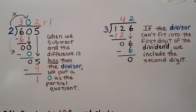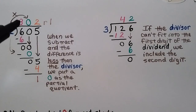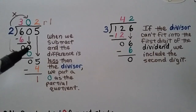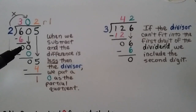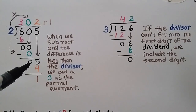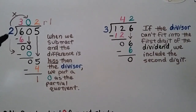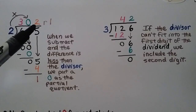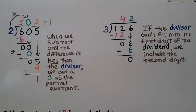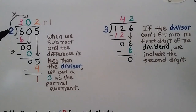Here we have 605 divided by 2. We ask how many times can 2 fit into 6 — 3 times. We write the 3 up here; 2 times 3 is 6. We do our subtraction and get a 0, and now it's this 0's turn to come down. How many times can 2 fit into 0 — it can't, it fits 0 times. So we put a 0 up here; 2 times 0 is 0. We subtract again: 0 minus 0 is 0. Now it's the 5's turn to come down. How many times does 2 fit into 5 — 2 times 2 is 4. We write the 2 up here and the product 4 down. We do our subtraction and get a 1. We have 302 remainder 1. When the difference is less than the divisor, or is 0, we just put a 0 as the partial quotient and move on.